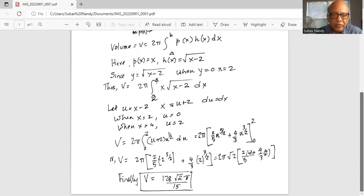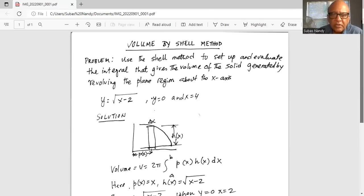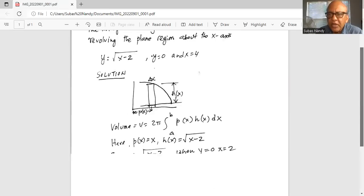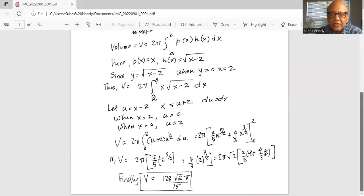Okay now we put the limits. So volume is equal to 2 pi, 2 fifth u to the power of 5 by 2, the limits are 0 to 2. So it is 2 to the power of 5 by 2. You can forget 0 because 0 is 0, and then the other one is 4 third 2 to the power of 3 by 2.